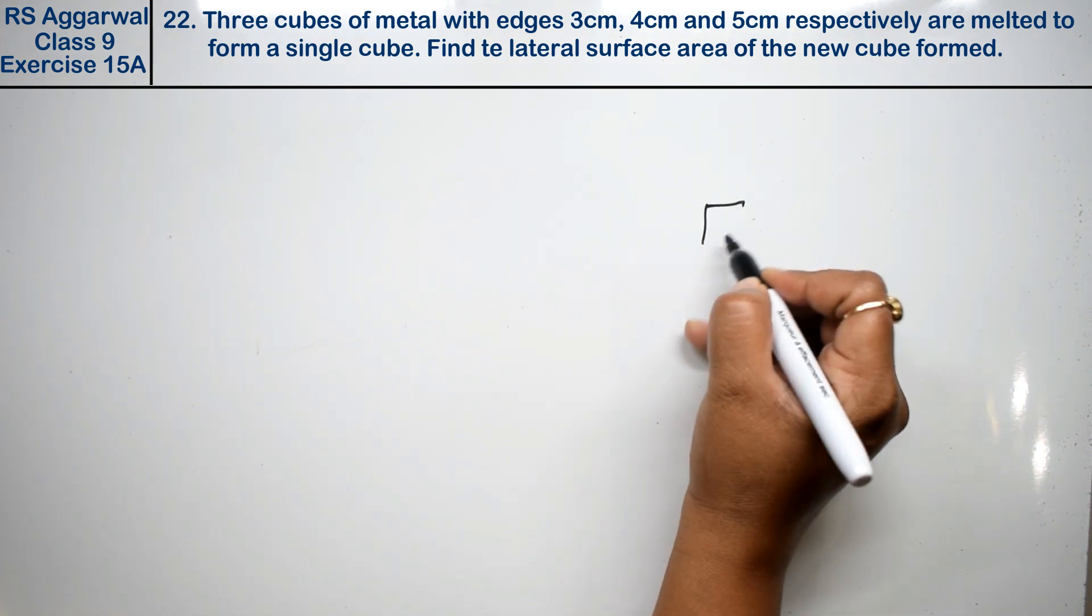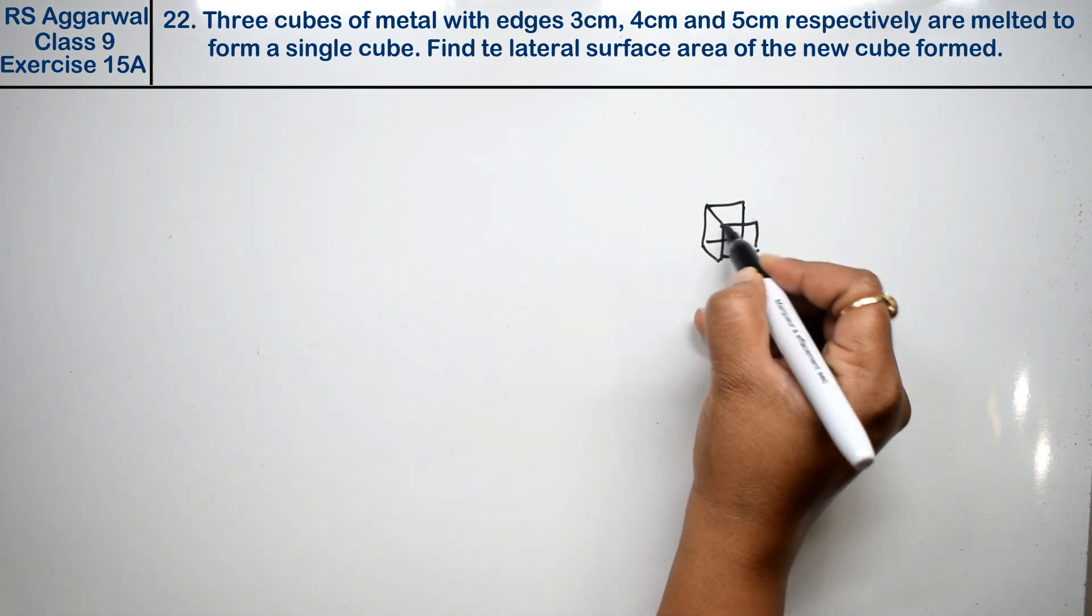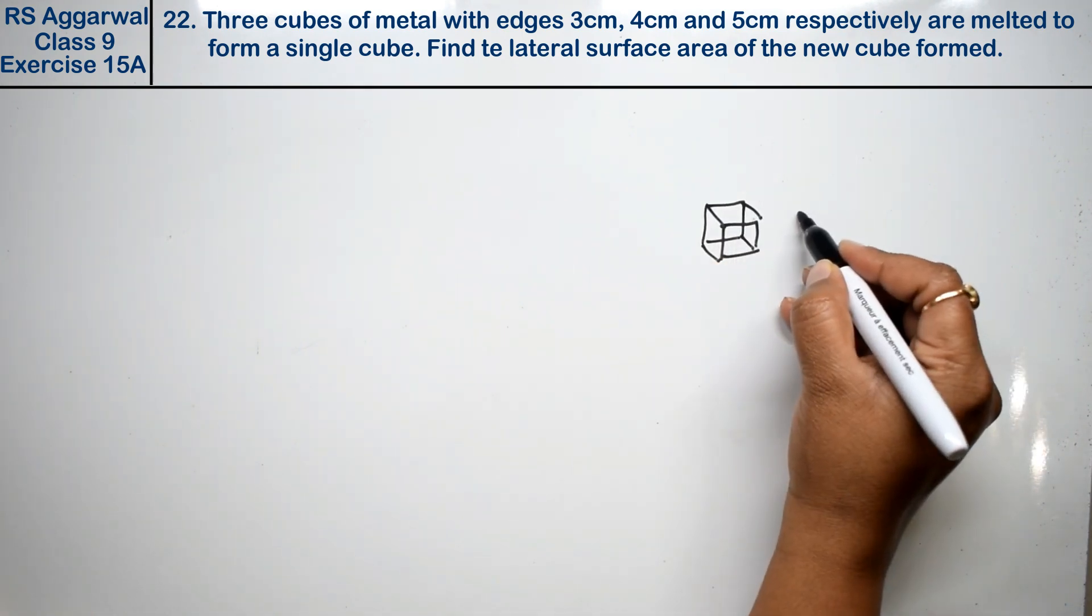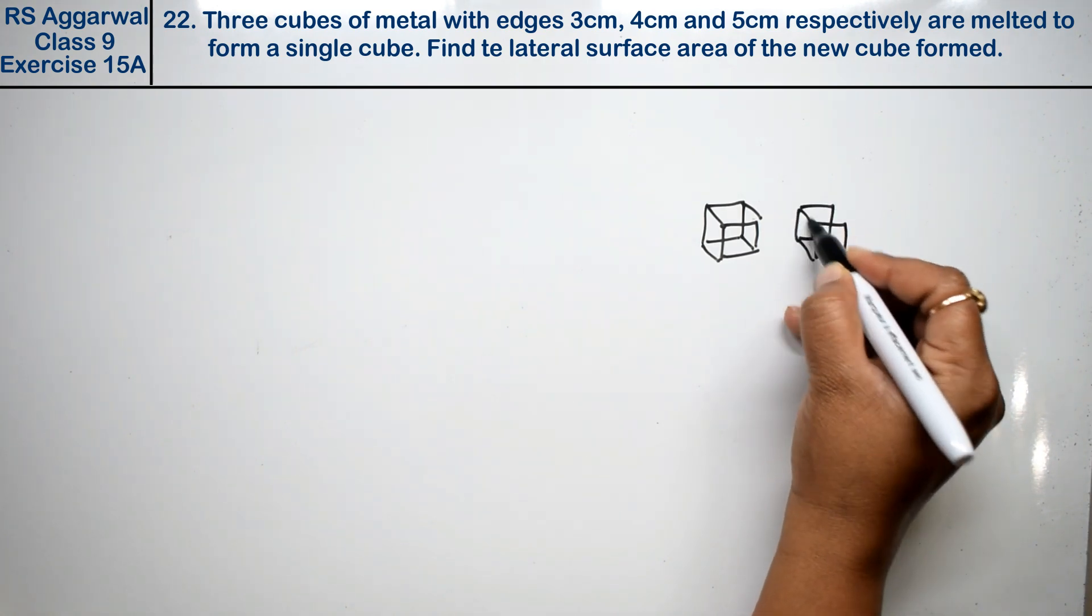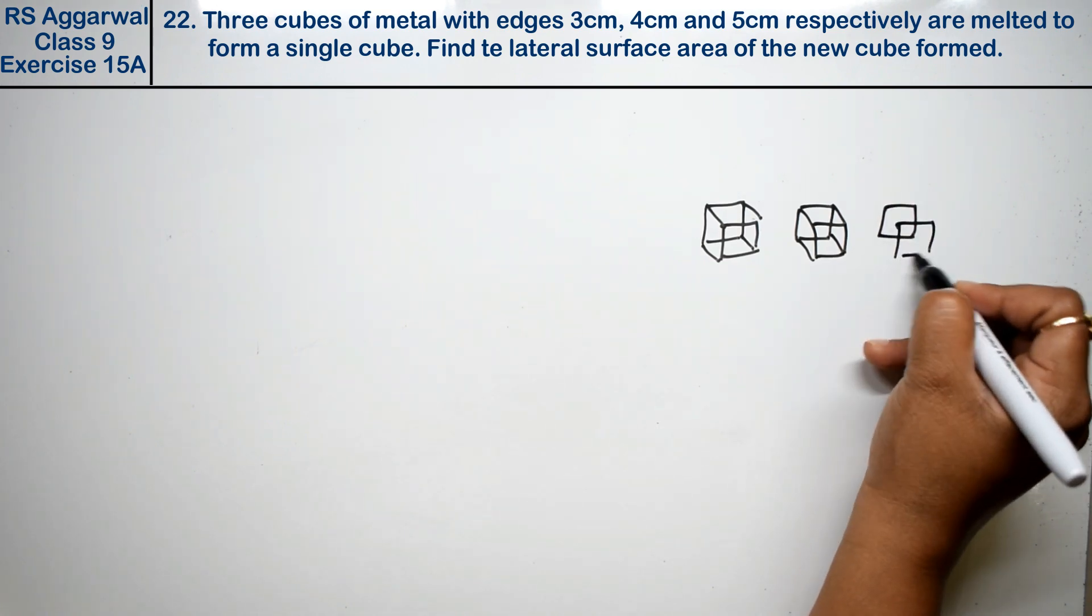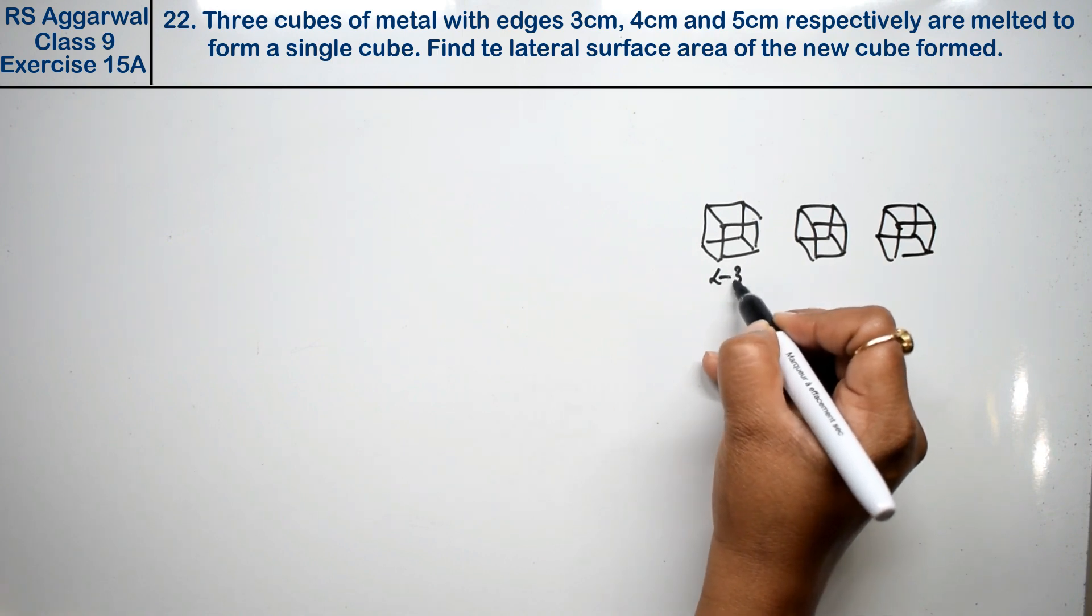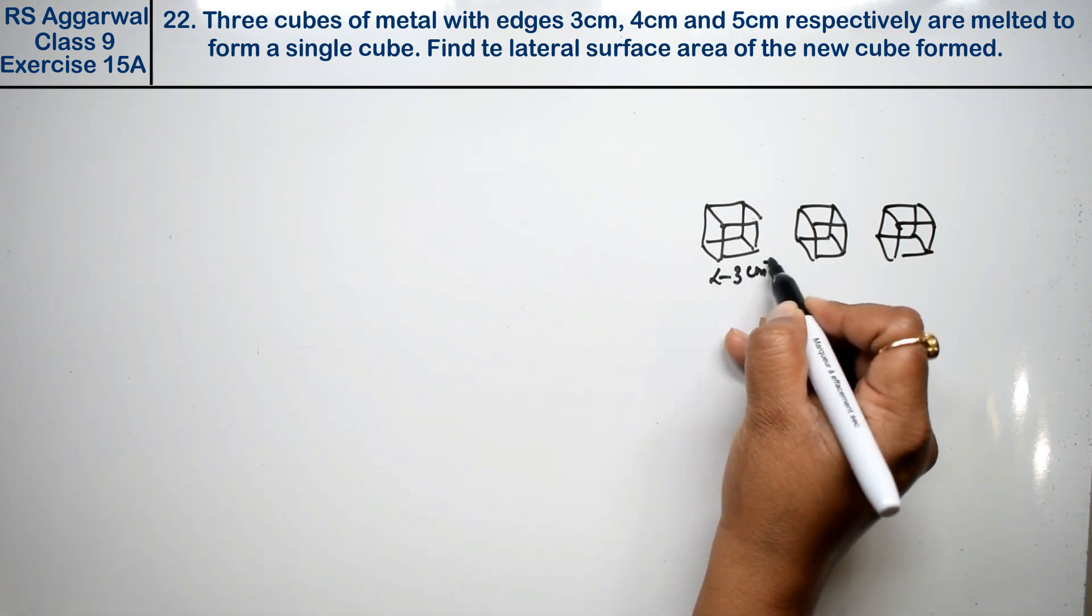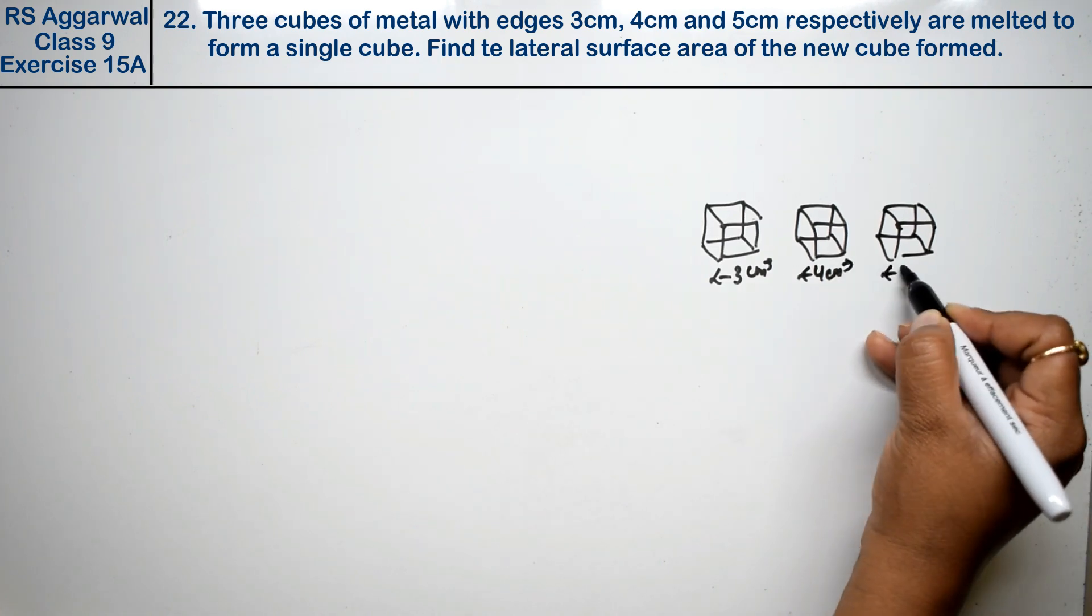We are saying that three cubes... this one is 3, this one is 4, and this one is 5.